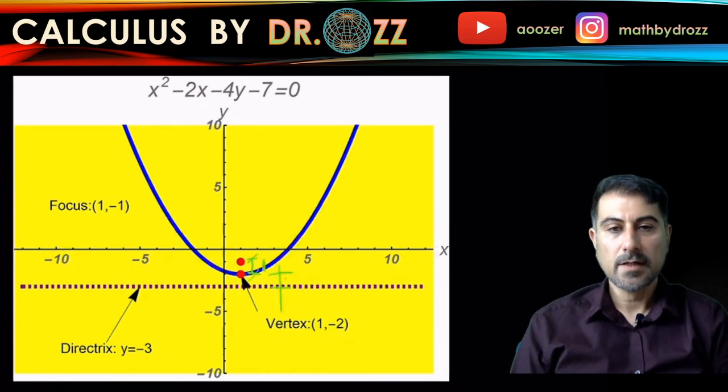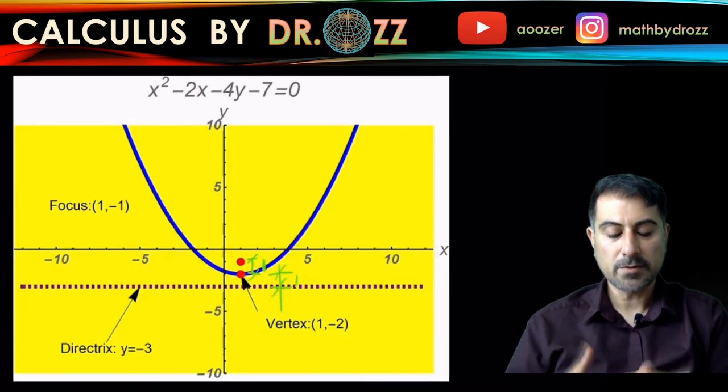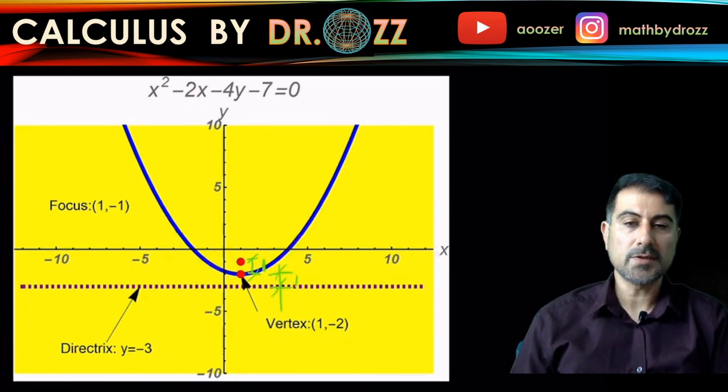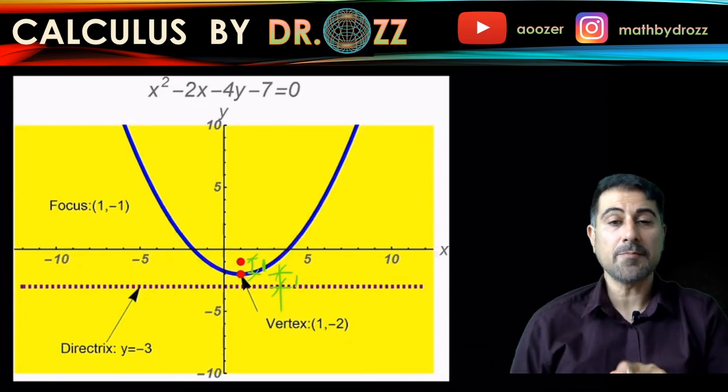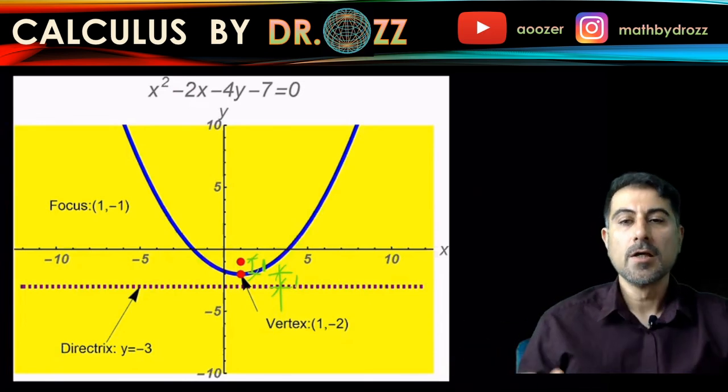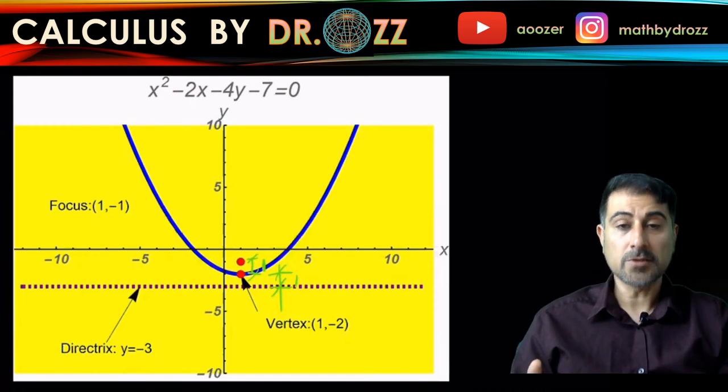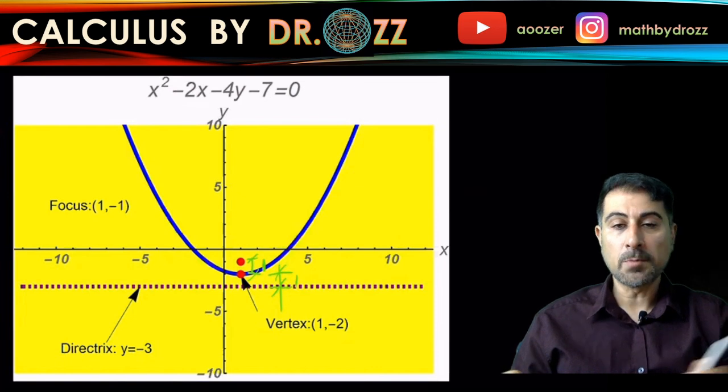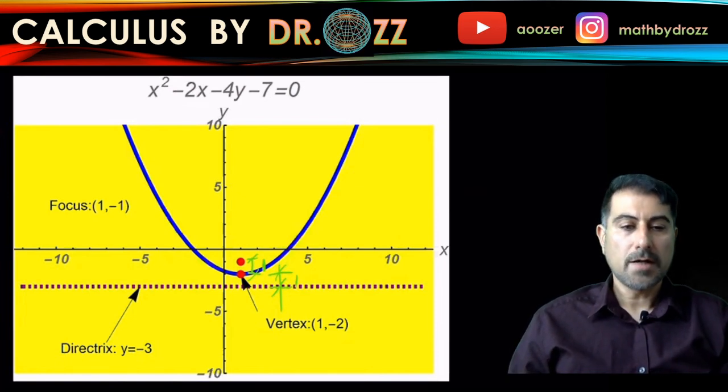From the directrix to vertex, vertex to focus, they're all one unit. p is positive 1 in this case, that means we're going up in this direction. Generally, the sign with p refers to the direction that you should go from the vertex to focus.